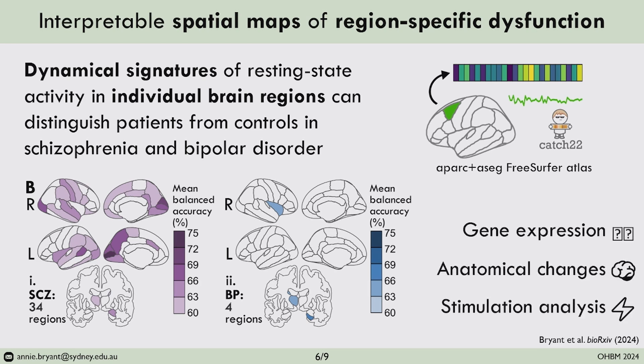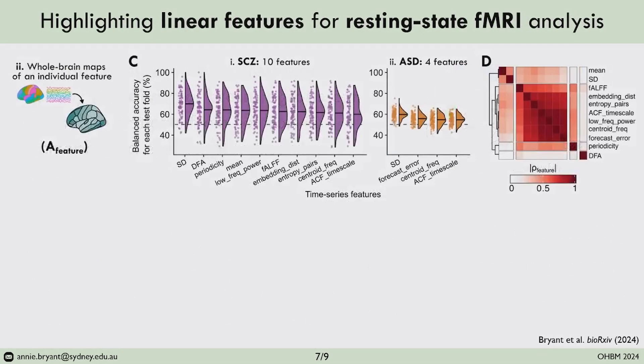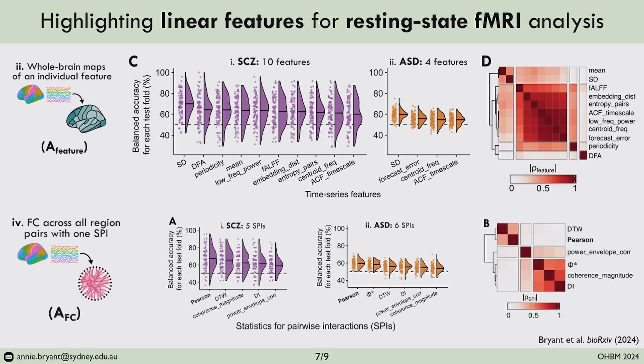This analysis is beneficial because it allows us to link local brain dynamics with region-specific data on gene expression, anatomical changes, and stimulation analysis. At a high level, time series features sensitive to linear dynamics — like the centroid of the power spectral density or the Pearson correlation coefficient — performed well, particularly for schizophrenia and autism spectrum disorder. This is in line with growing work indicating that linear models are both suitable and sufficient to capture resting state brain activity, suggesting that in the low temporal resolution regime of resting state fMRI, brain dynamics are approximately linear.